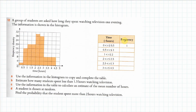Now we've got to copy and complete the table. We've got some frequency density values, so we're going to use the formula: frequency equals frequency density multiplied by class width. From 0.5 to 1, we've got a class width of 0.5 and a frequency density of 16, so half of 16 is 8.